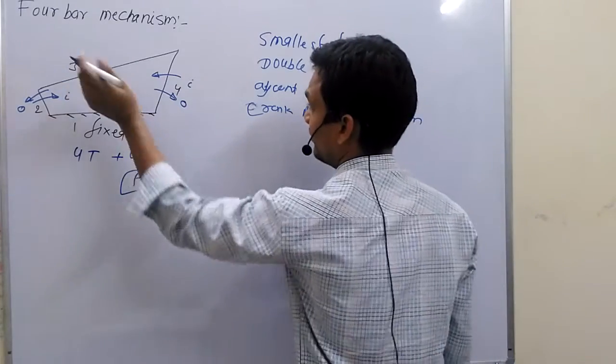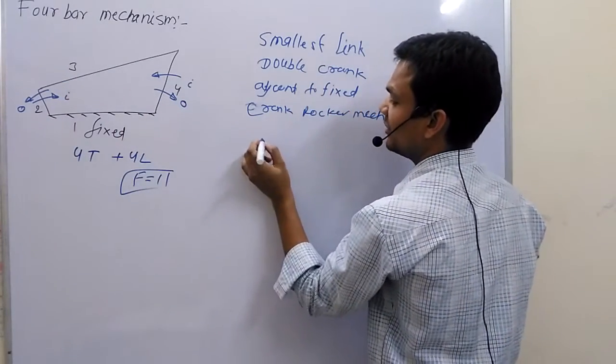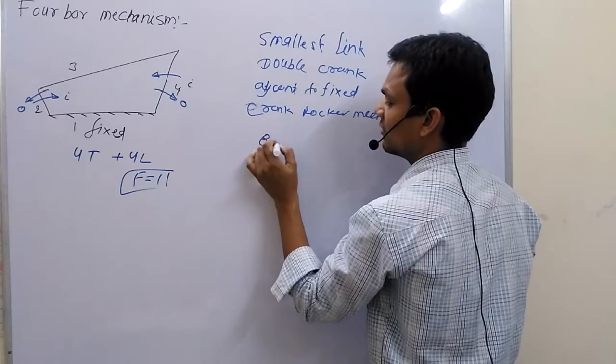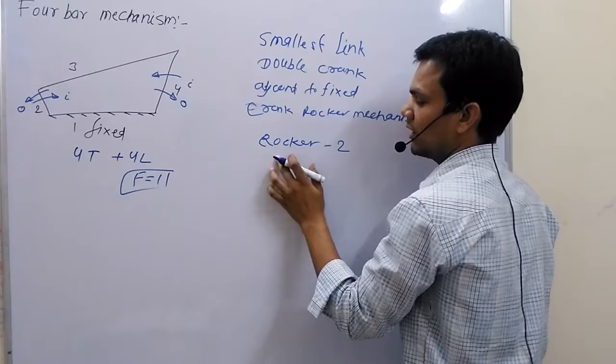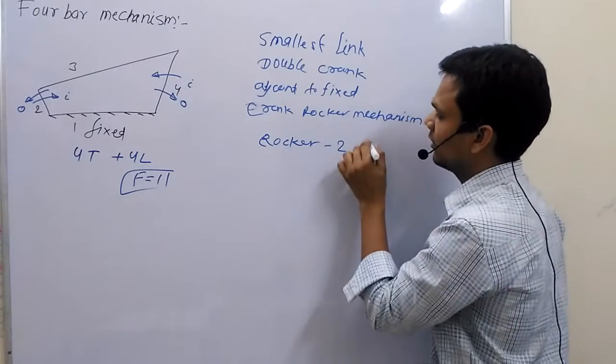If smallest link is at the place of coupler, then we obtain double rocker mechanism.